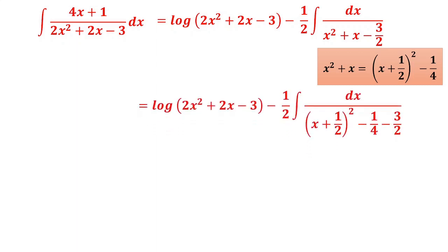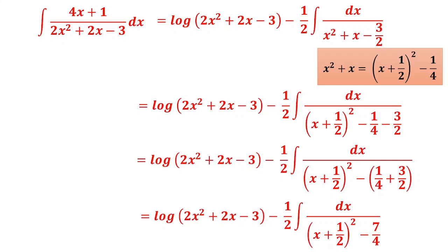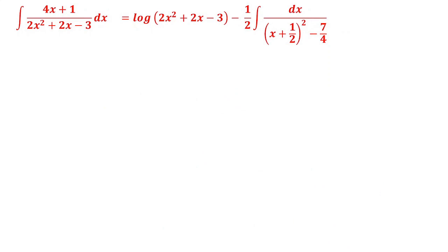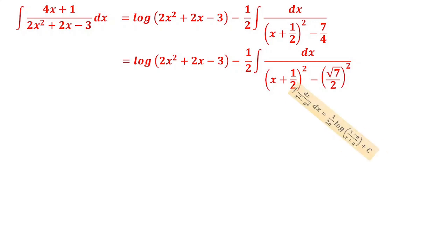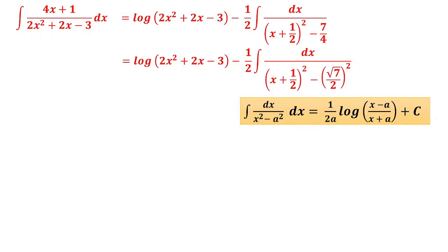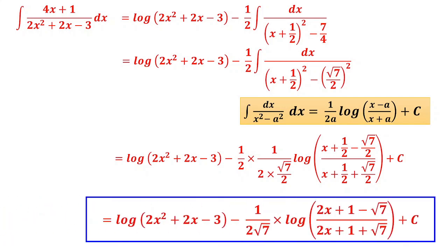So the integral becomes −(1/2)∫dx/[(x+1/2)²−7/4]. Write 7/4 = (√7/2)². Apply the formula ∫dx/(x²−a²) = (1/2a)·log|(x−a)/(x+a)|, with x replaced by x+1/2 and a = √7/2. Final result: log(2x²+2x−3) − (1/2)·(1/2·√7/2)·log|(2x+1−√7)/(2x+1+√7)| + c, simplifying to (1/(2√7))·log|(2x+1−√7)/(2x+1+√7)|.